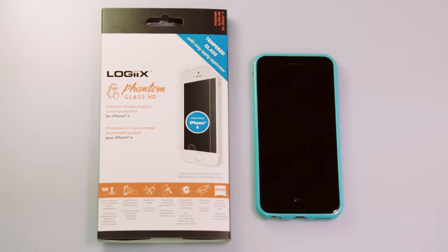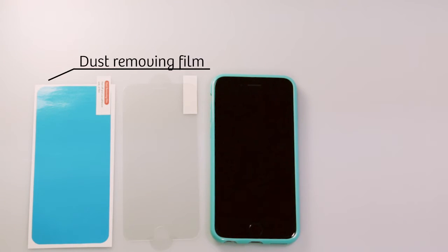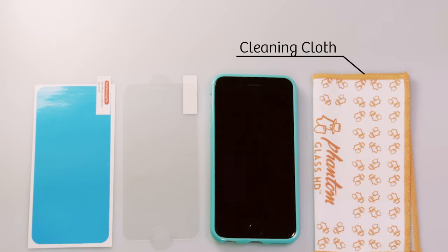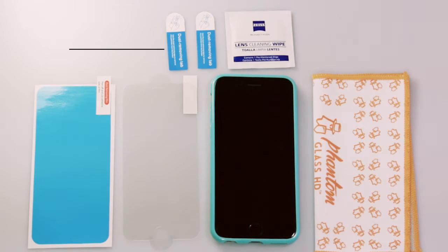I'm going to take you through right now how to apply the Phantom Glass HD to your phone. In this package you'll find one tempered glass screen protector with an easy apply applicator, one full-size dust removing film, one optical grade microfiber cleaning cloth, one Zeiss pre-moistened optical grade wipe, and two dust removing tabs.